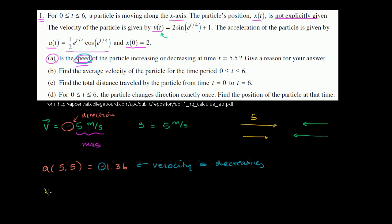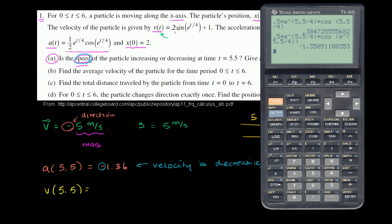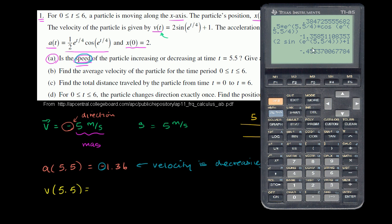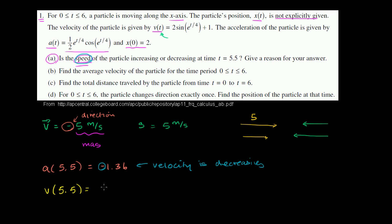So let's evaluate the velocity at t = 5.5. The velocity function is 2 × sin(e^(t/4)) + 1. Plugging in t = 5.5: 2 × sin(e^(5.5/4)) + 1. The result is approximately negative 0.45. So velocity is negative.